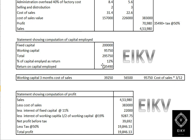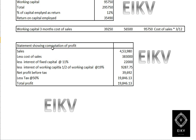Statement showing computation of net profit after tax: Sales are 4,53,980. Less cost of sales 3,83,000. Less interest on fixed capital at 11%: 22,000. Less interest on working capital — half of 95,750 at 19% — approximately 9,087.75. Therefore, net profit before tax is 39,692. Tax at 50% is 19,846. Therefore, net profit after tax is approximately 19,846.